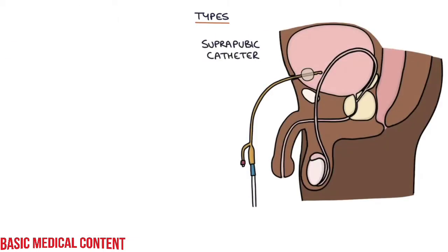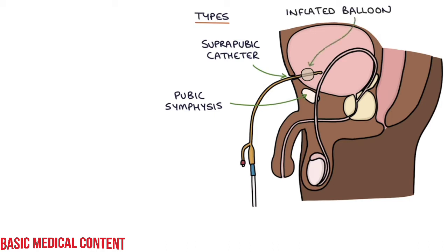Suprapubic catheters are inserted directly through the abdomen into the bladder, just above the pubic symphysis in the suprapubic area. Local anaesthetic is used to numb the area before insertion. An inflated balloon holds the suprapubic catheter in place in the same way as a urethral catheter, and when used long-term, they can be easily replaced at regular intervals by an appropriately trained person.